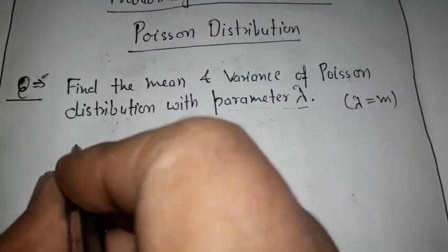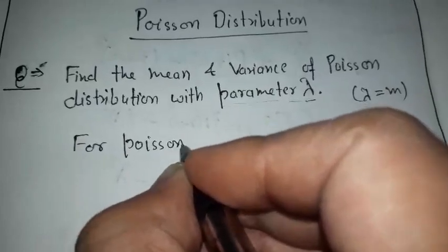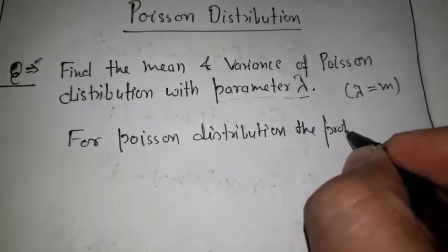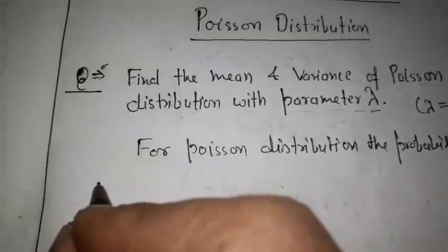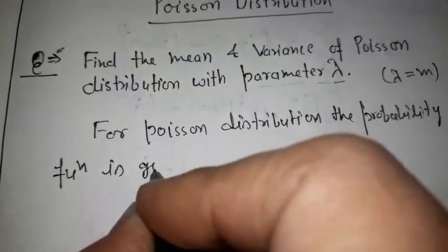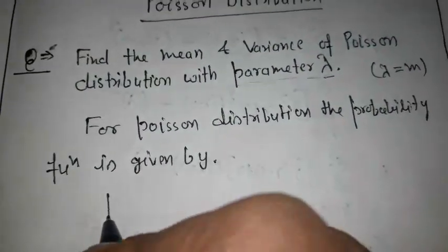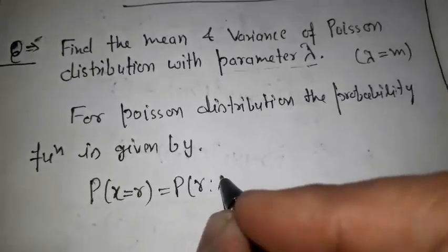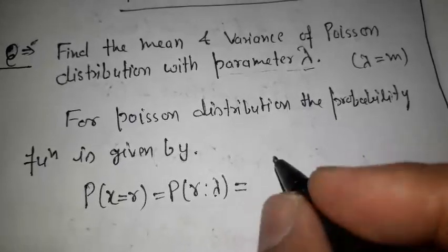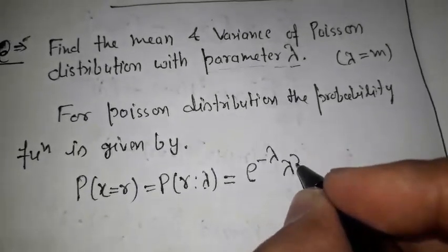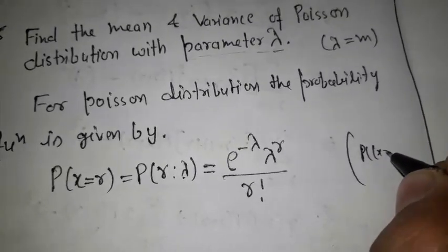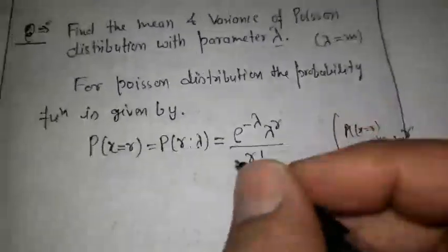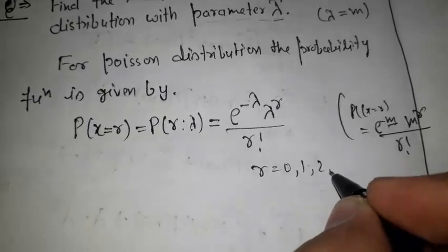For the Poisson distribution, the probability function is given by: probability for r successes, or it can be written as p(r, lambda), where lambda represents the mean m. It is equal to e to the power minus lambda, times lambda to the power r upon factorial r, where r is equal to 0, 1, 2, 3 and so on.